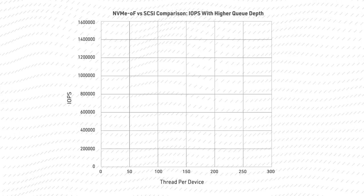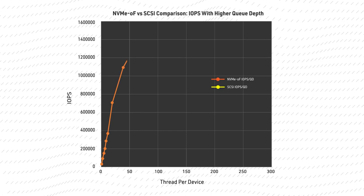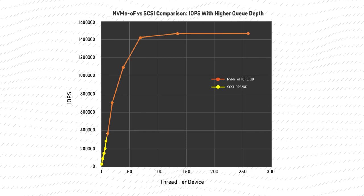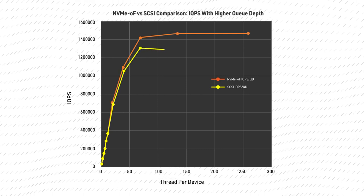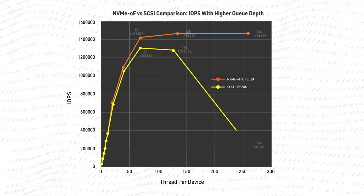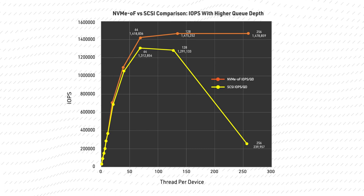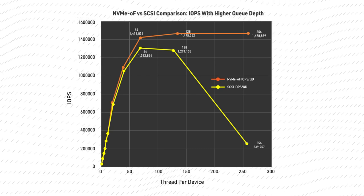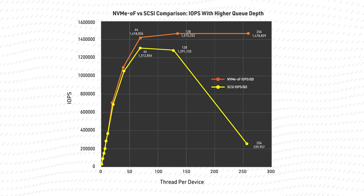Also observed during testing was a queuing difference that demonstrated another advantage of NVMe over fiber channel. To achieve higher IOPS during testing, we increased the queue depth per device. In the SCSI over fiber channel configuration, peak IOPS were achieved at a queue depth of 64. At higher queue depths of 128 and 256, IOPS declined quite sharply at the highest queue depth of 256 because the maximum SCSI queue depth of 120 per LUN was exceeded.